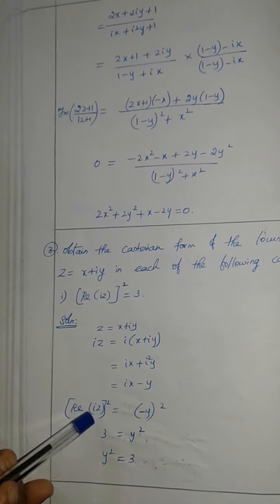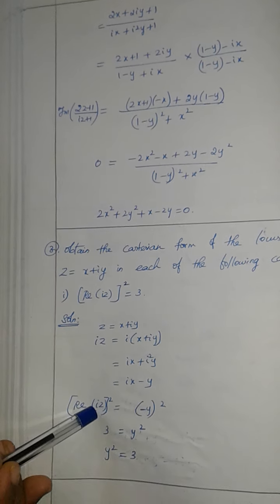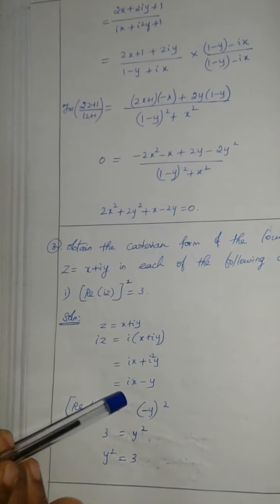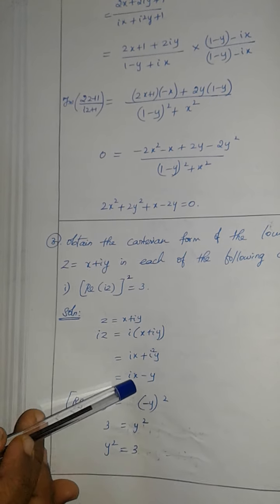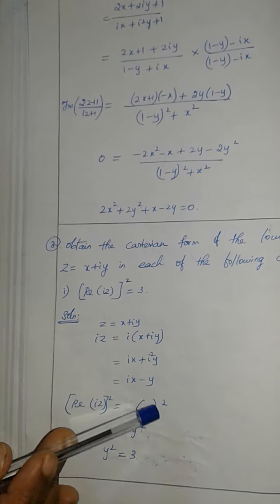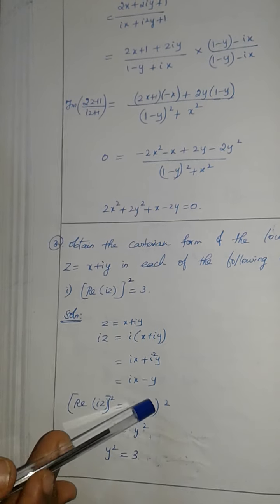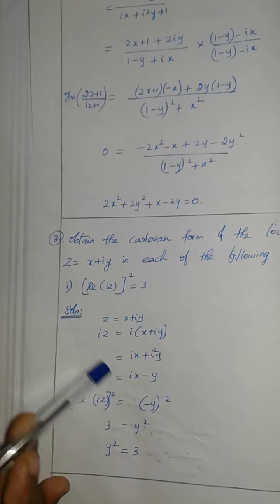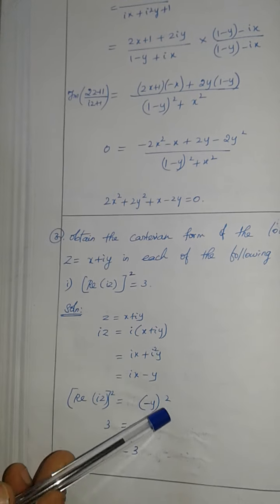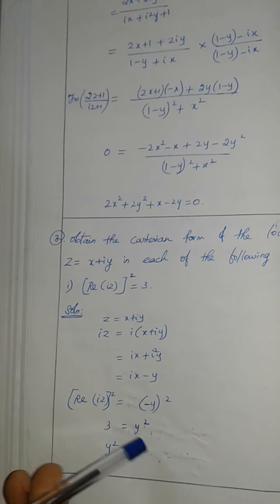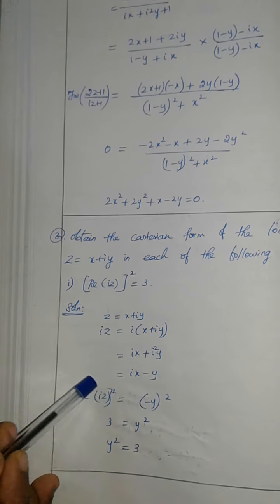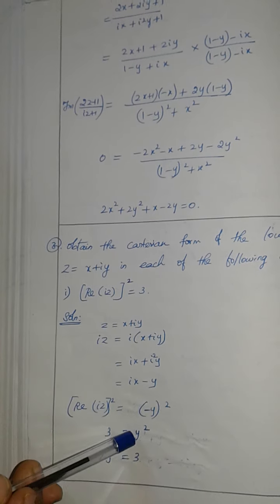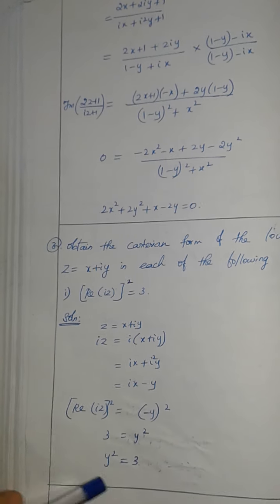We have the real part of iZ. The real part of iZ is minus y. So the square of the real part of iZ is y². The value of the locus is equal to 3, so y² is equal to 3.